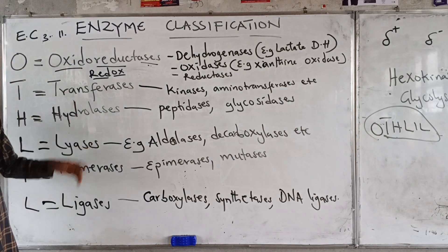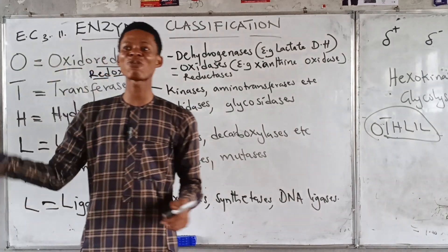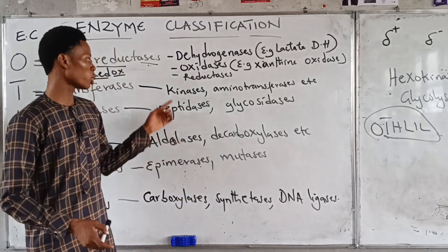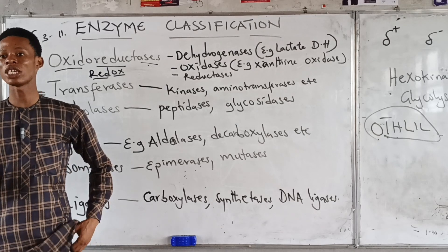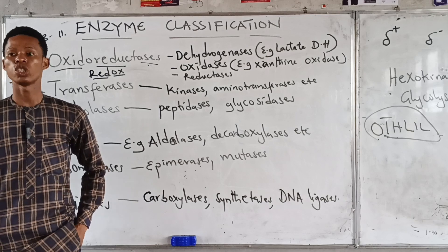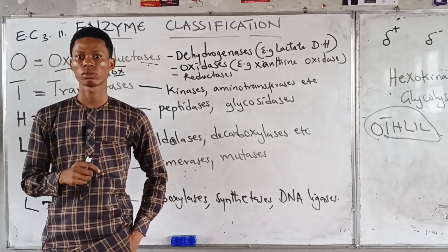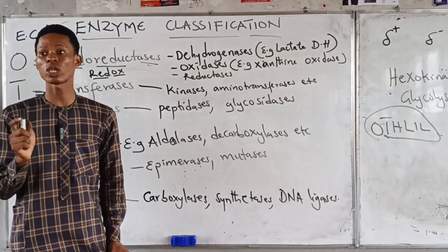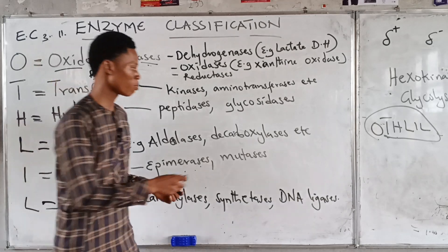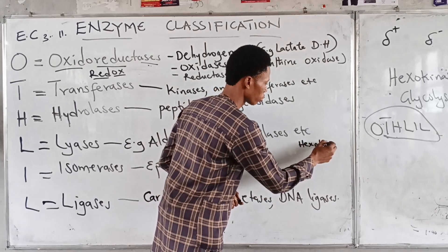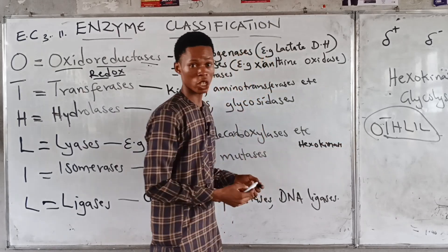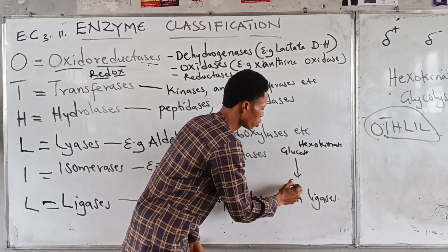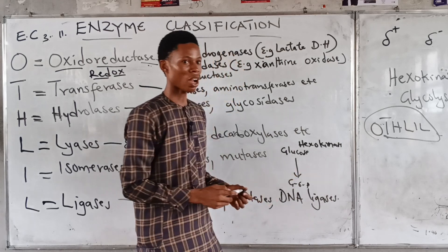The second class of enzyme is transferases. They transfer a specific group — other than hydrogen — from one substrate to another. An example is kinase. Anytime you see an enzyme ending with 'kinase', just know that enzyme is transferring a phosphate group. For example, hexokinase — as you hear kinase, you know it's transferring a phosphate group.